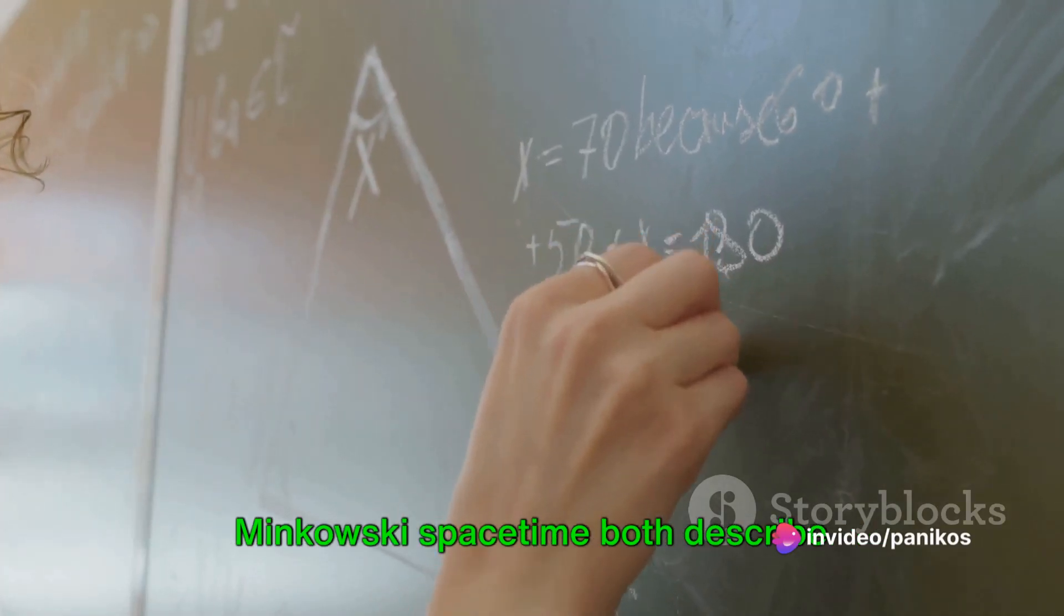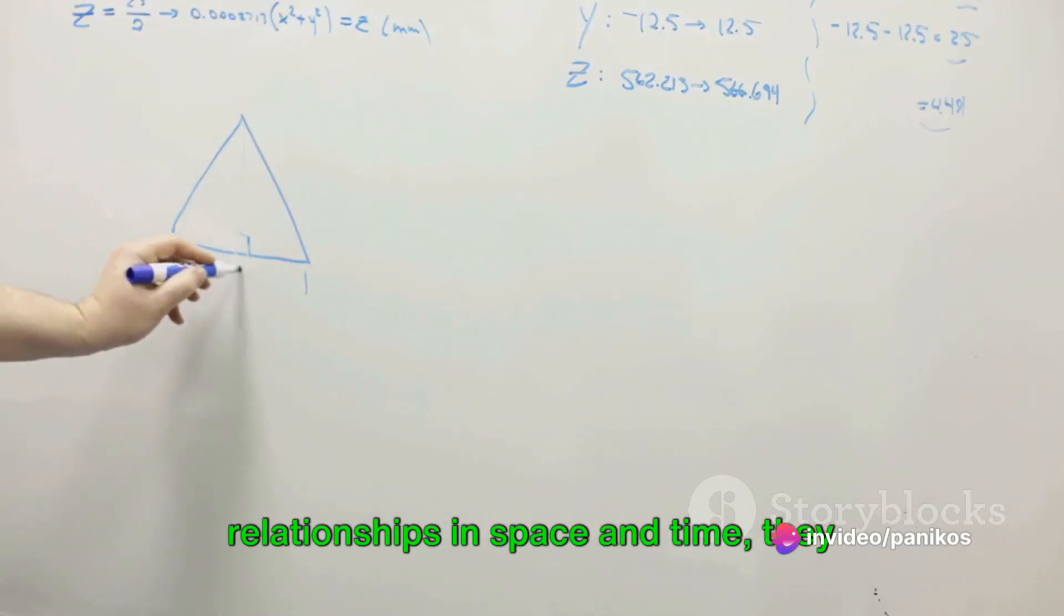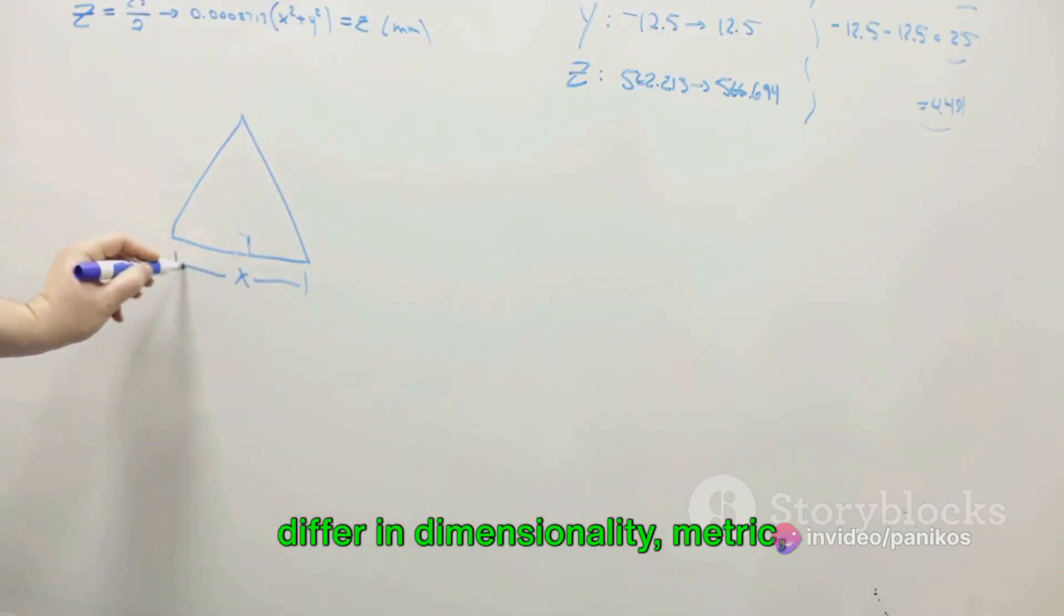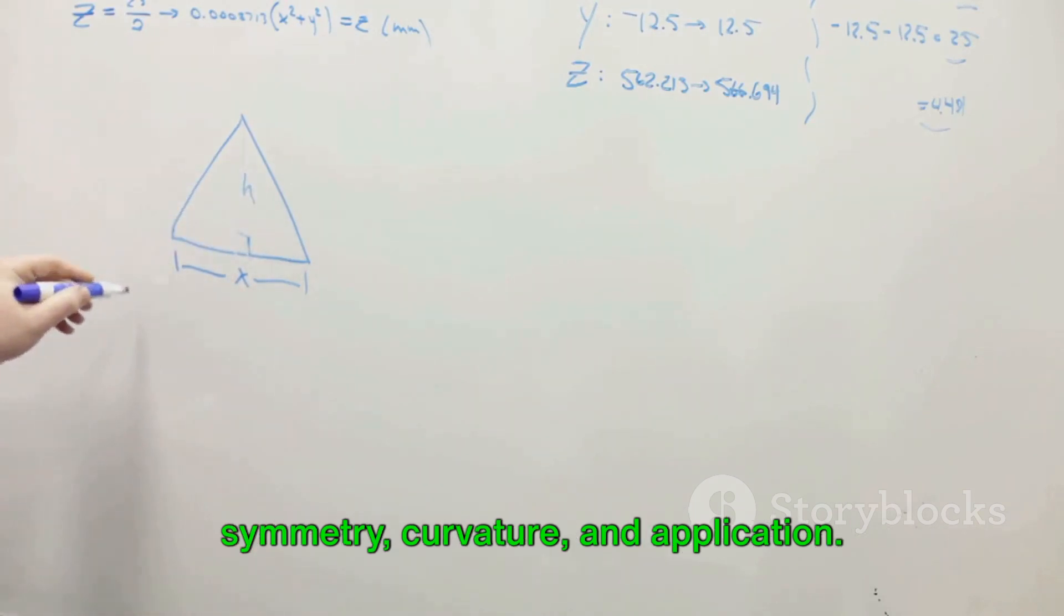In summary, while Euclidean geometry and Minkowski spacetime both describe relationships in space and time, they differ in dimensionality, metric, symmetry, curvature, and application.